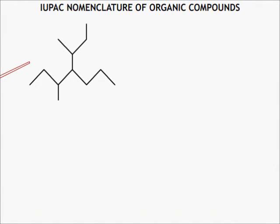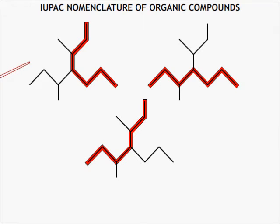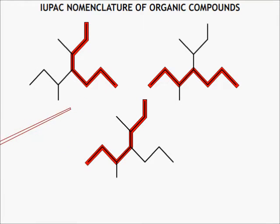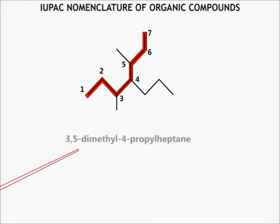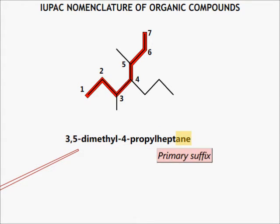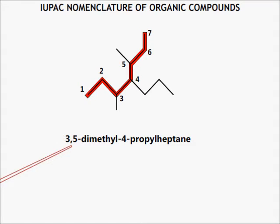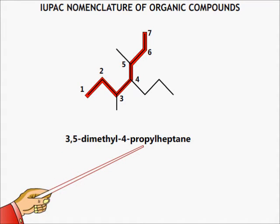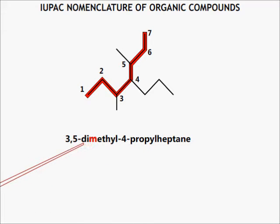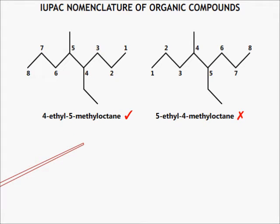In this compound, there are no functional groups or multiple bonds. Three possible longest chains exist. The chain with three substituents is chosen, while the other two have only two substituents. After numbering the chain, we get the name. Note that numbers are separated by commas, and the prefix dimethyl is written before propyl due to alphabetization. Dimethyl is alphabetized under M, not D.